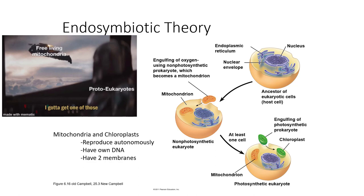At least once, what happened was a chloroplast — something like a cyanobacteria — was taken in by one of these eukaryotes and likewise not digested, and this became the chloroplast we know today. Some evidence for this theory: first, mitochondria and chloroplasts reproduce on their own. They don't overwhelm the cell; they actually reproduce in symbiosis with the cell.